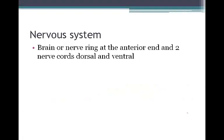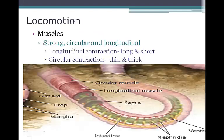The brain, or nerve ring, at the anterior end, along with two nerve cords — dorsal and ventral — make up the nervous system of the segmented worms. Worms use muscles to move, and there are strong circular and longitudinal muscles.